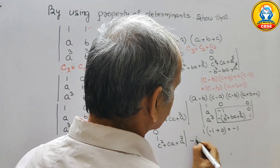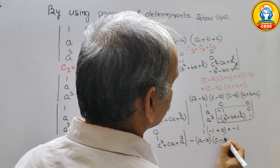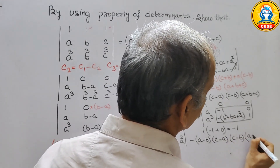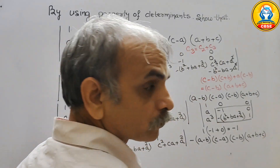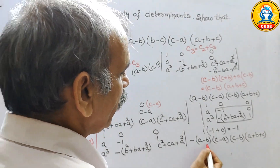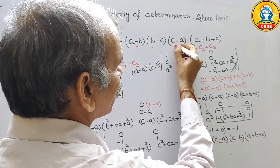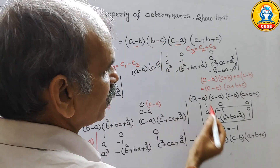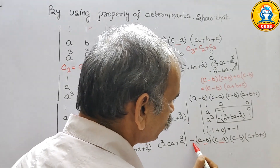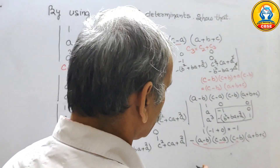Multiplying minus 1 into the factors outside, we get: minus(a minus b)(c minus a)(c minus b)(a plus b plus c). Now checking: (c minus b) with the minus sign becomes (b minus c). So the final expression is (a minus b)(c minus a)(b minus c)(a plus b plus c).